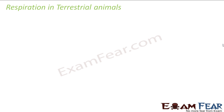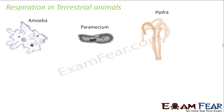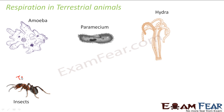Let us look at some terrestrial animals and what kind of respiratory system they have. Starting with simple organisms like amoeba — a unicellular organism — paramecium, and hydra. These lower, simpler animals do not have any specific organ for respiration. Respiration occurs through the body surface — the exchange of gases happens through the surface of their body, which itself acts as the respiratory surface. Some other organisms like insects have a tracheal system, which is basically a system of air tubes present inside the body through which respiration takes place.